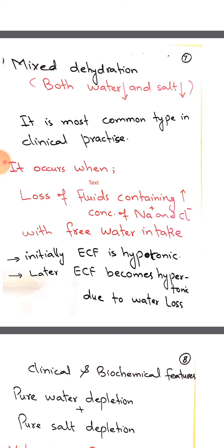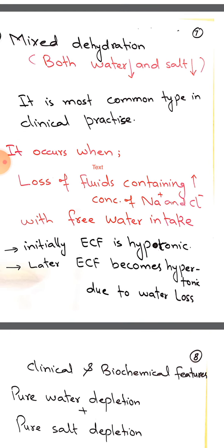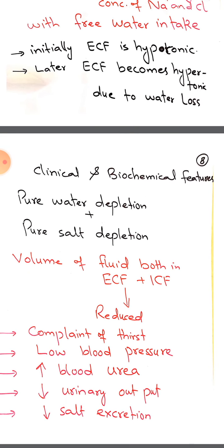Later on, as time goes on, ECF will become hypertonic because loss of water is more compared to salt, since water can no longer be compensated from ICF. As dehydration continues with no fluid replenishment, both ECF and ICF volumes will be reduced.